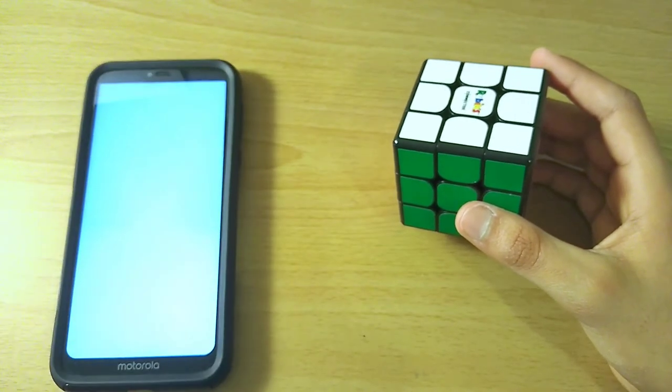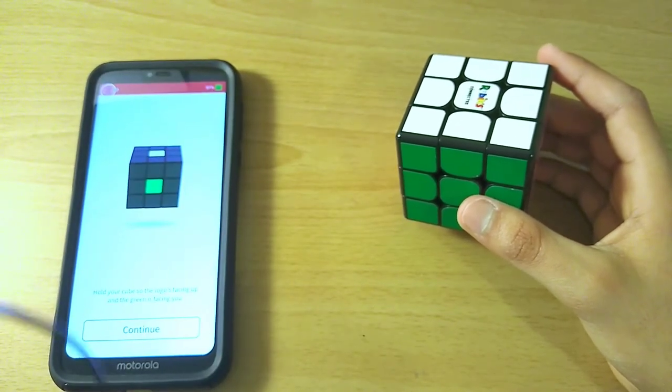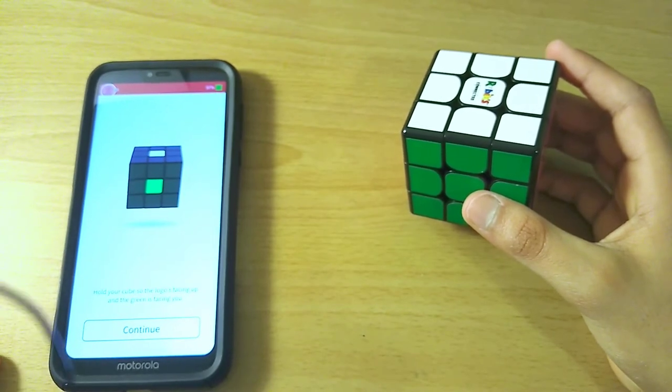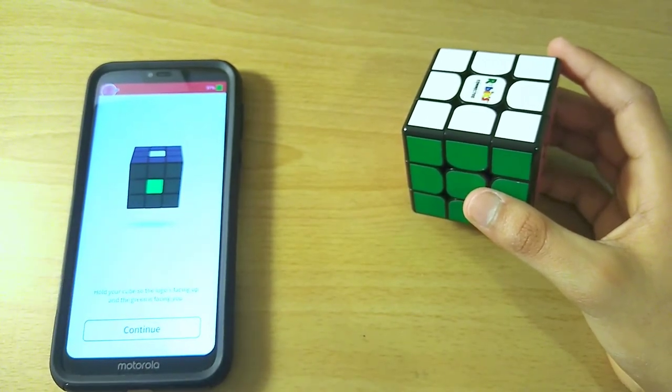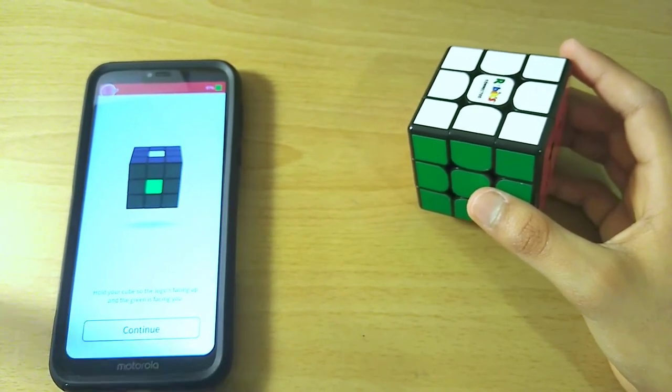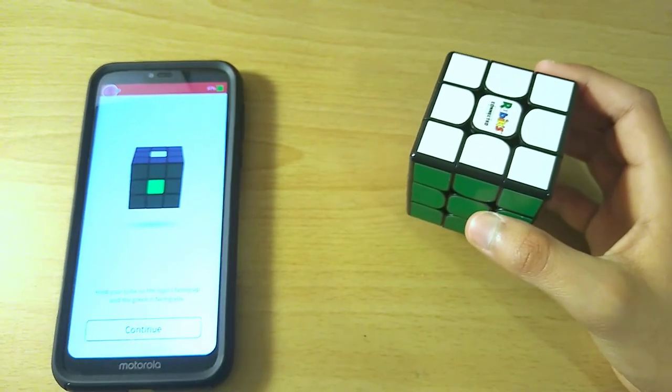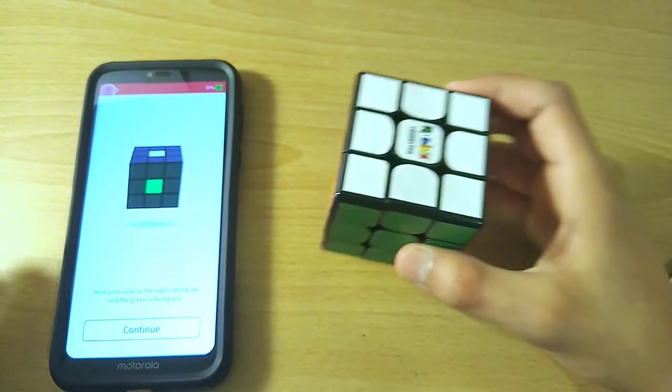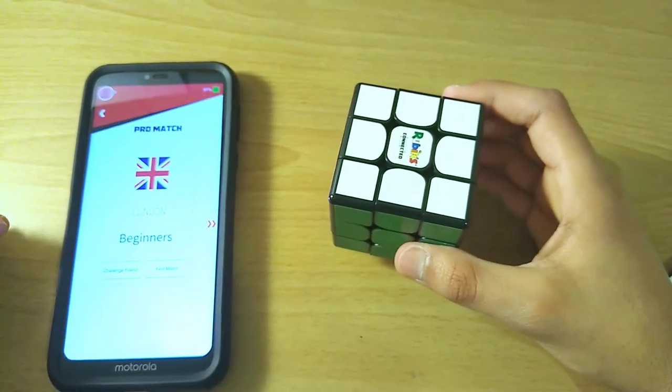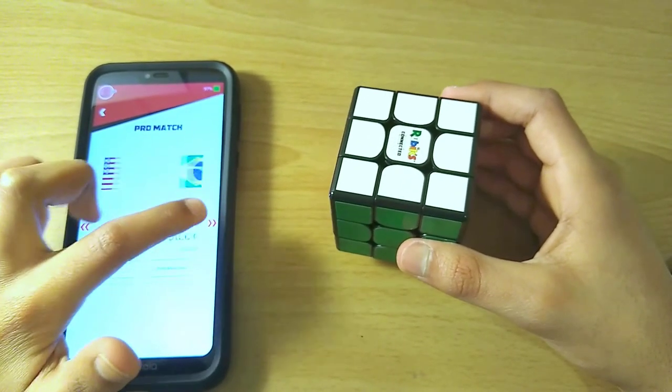And next, we have the thing that I like the most, which is Procuber. Oh, sorry. This wire's been here the whole time. Don't mean for that to be. It's a microphone. I'm trying to move that. All right. So Procuber. Obviously green in front, white on top. And then you can choose your skill level.